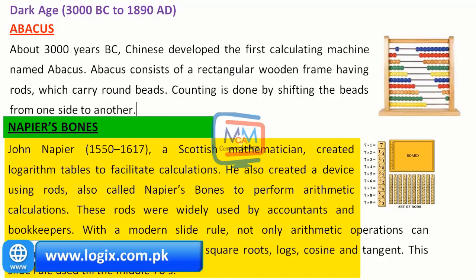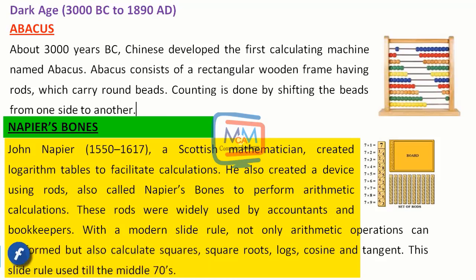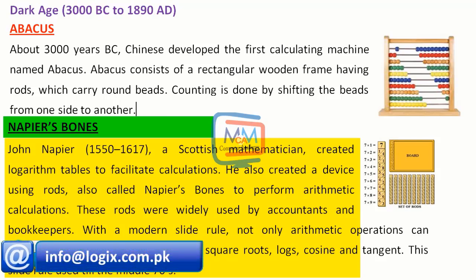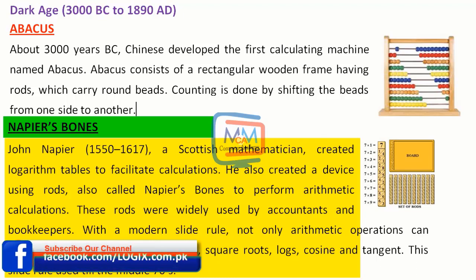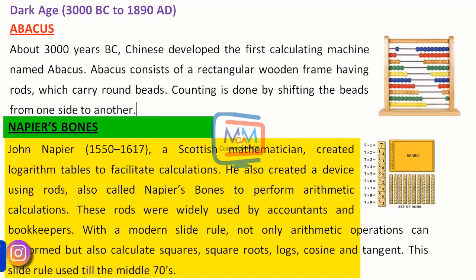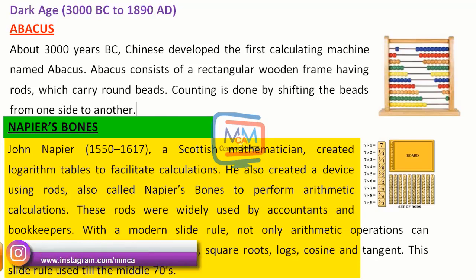John Napier, a Scottish mathematician, created the logarithm table to facilitate calculations. He also created a device using rods, also called Napier's bones, to perform arithmetic calculations. These rods were widely used by accountants and bookkeepers.